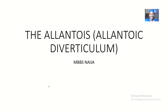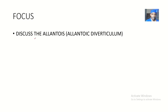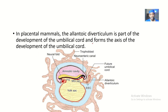Up next we'll be talking about the allantois, which is also known as the allantoic diverticulum. I'll be talking about the embryology of this structure, and basically I'm leading to talk about its uses in a developing embryo and possibly the structures which it develops into. So the allantois or allantoic diverticulum is basically an outpushing — I would like to say an extension.